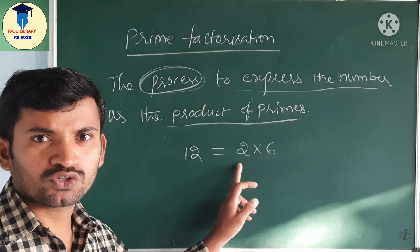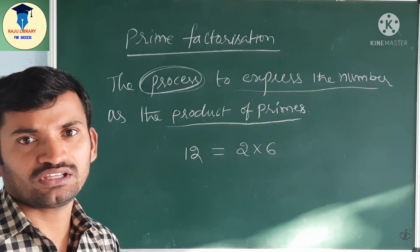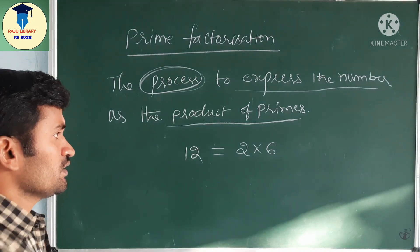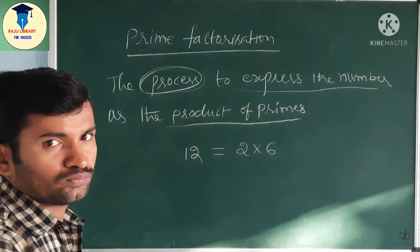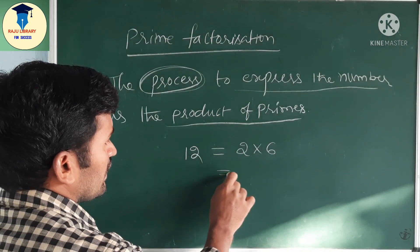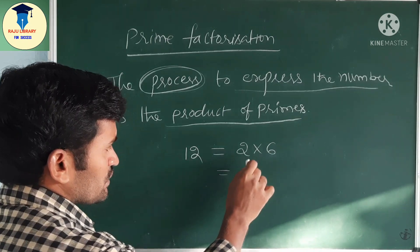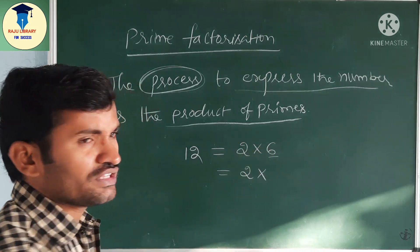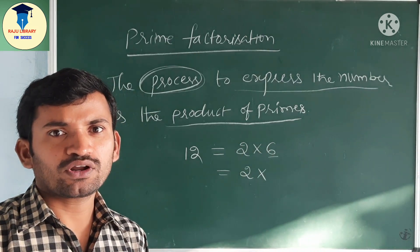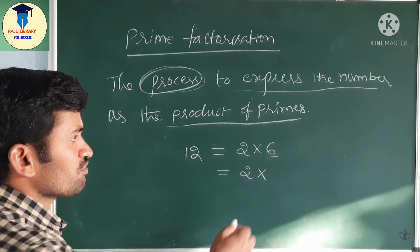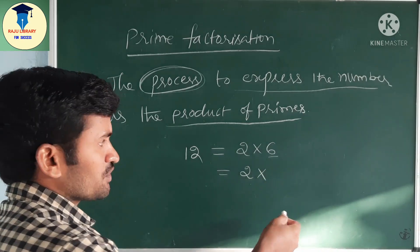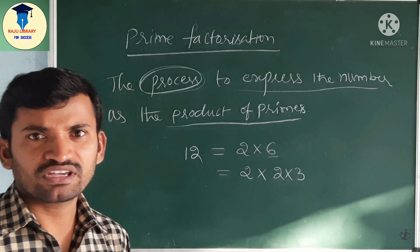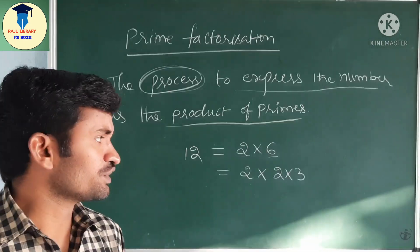If it is not possible with 2, next we have to go for 3. Why? Because after 2, the immediate prime number is 3. So we take 2 × 6 = 12. Write this 2 as it is, and this 6 we have to write as a product of primes. So 6 = 2 × 3.